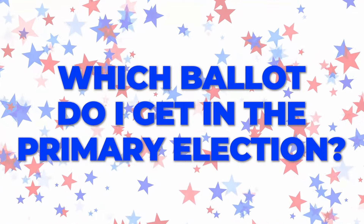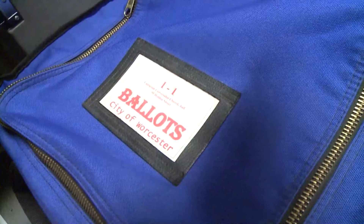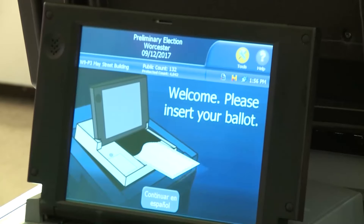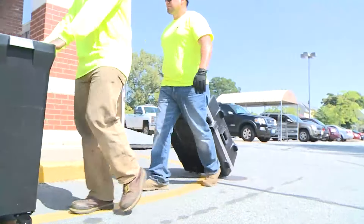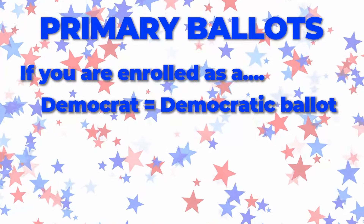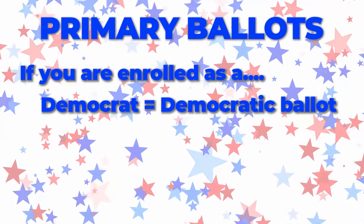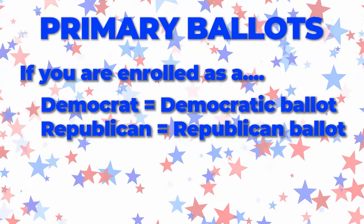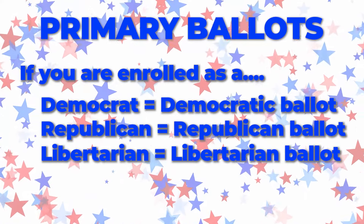Which ballot do I get? Each voter votes with a specific party ballot, depending on if they are registered in a political party. If you are enrolled in the Democratic Party, you will receive a Democratic Party ballot. If you are enrolled in the Republican Party, you will receive a Republican Party ballot. If you are enrolled in the Libertarian Party, you will receive a Libertarian Party ballot.